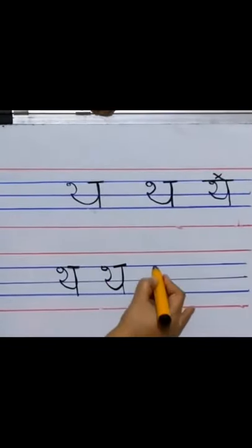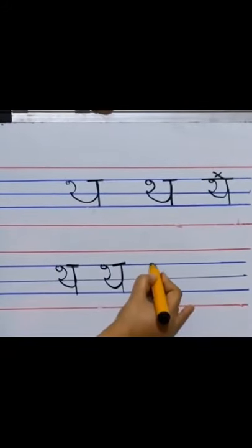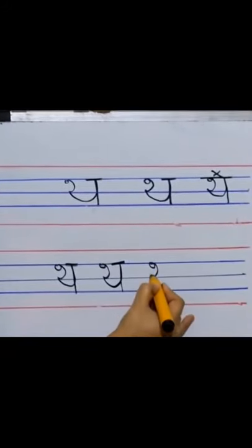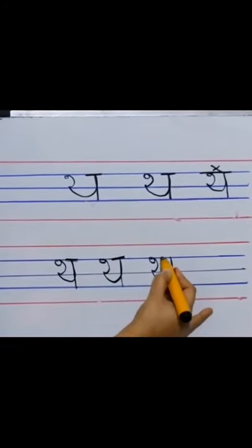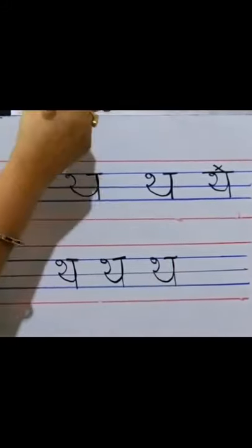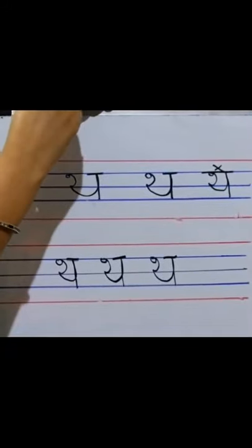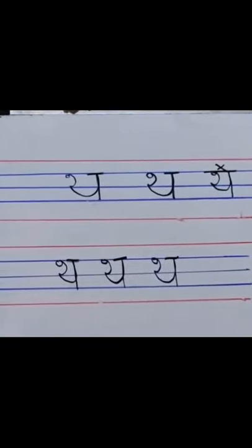Circle, ulta C. Make a U which goes up, come down, and a sleeping line overhead. Now children, in the similar manner you will be doing it in